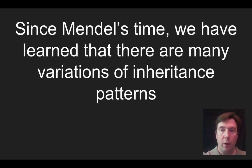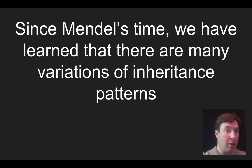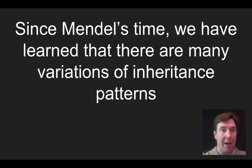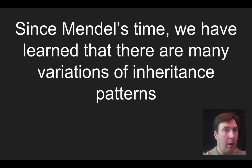So just to quickly review, I'll talk about incomplete dominance, co-dominance, multiple alleles, pleiotropy, epistasis, polygenic inheritance, the role of environment in the production of phenotype, and sex-linked traits. So a lot to get to in here. Hopefully we can get through these in a reasonable manner.